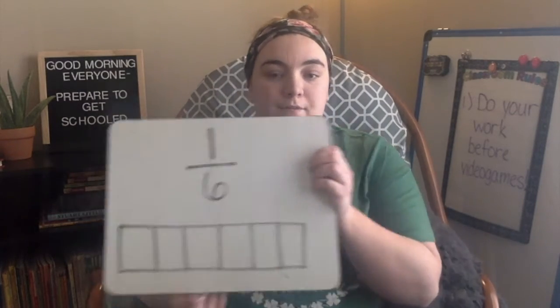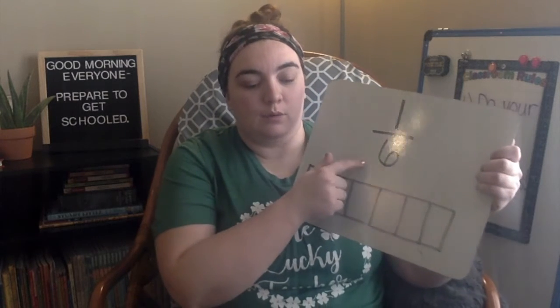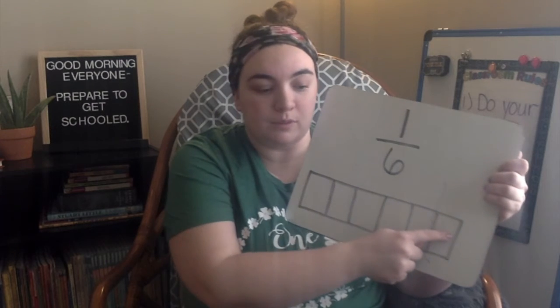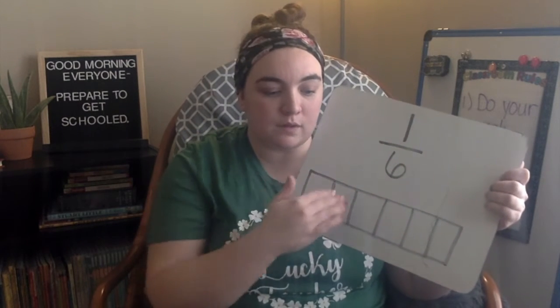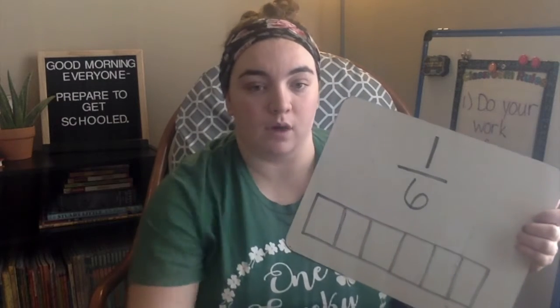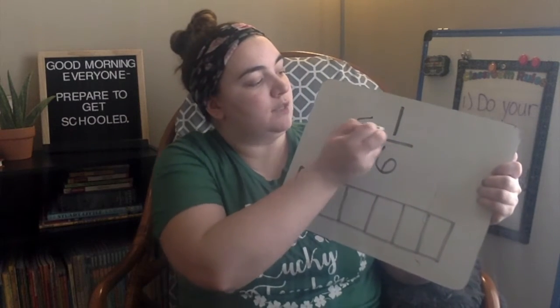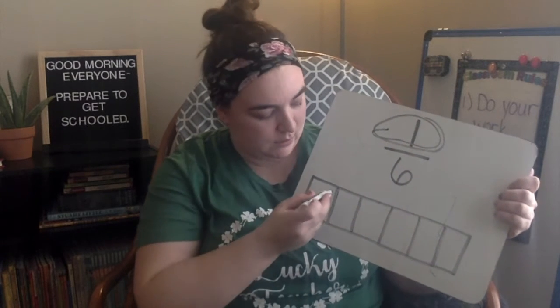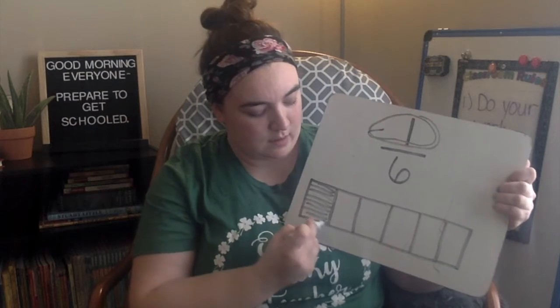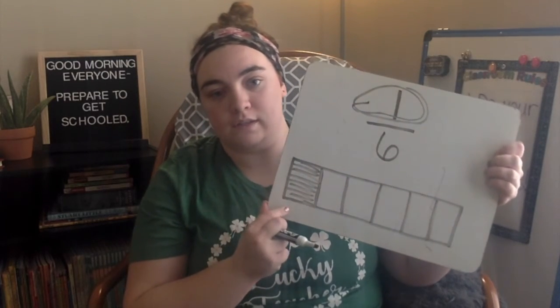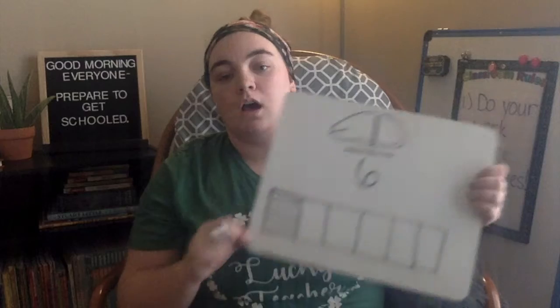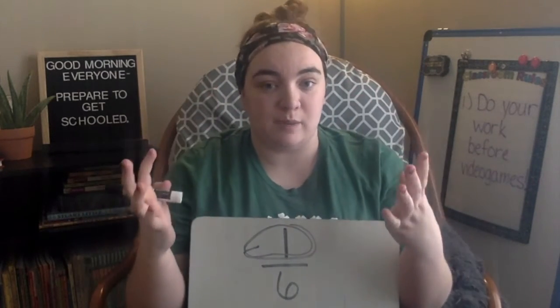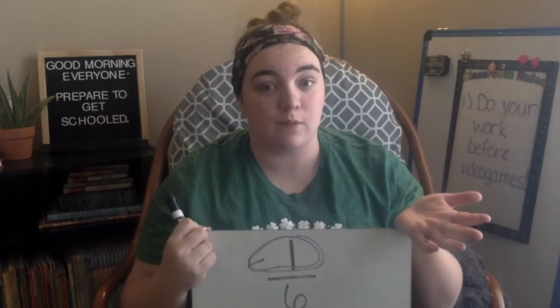So the bottom number of the fraction tells us how many equal parts are in the whole. So I drew an example. I've got one whole rectangle split into six equal groups. The top tells you how many of those equal groups are being described. So in my fraction one-sixth, one is my numerator. So one part of the equal six is being described. So I could color in my one-sixth. A common example is using pizza. So if we had a big pizza and we split it into six pieces and you ate one, you would have eaten one-sixth of the whole pizza.